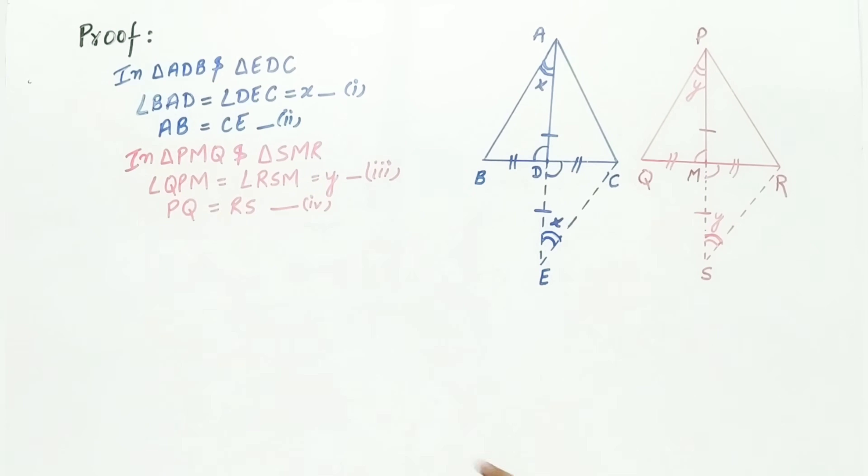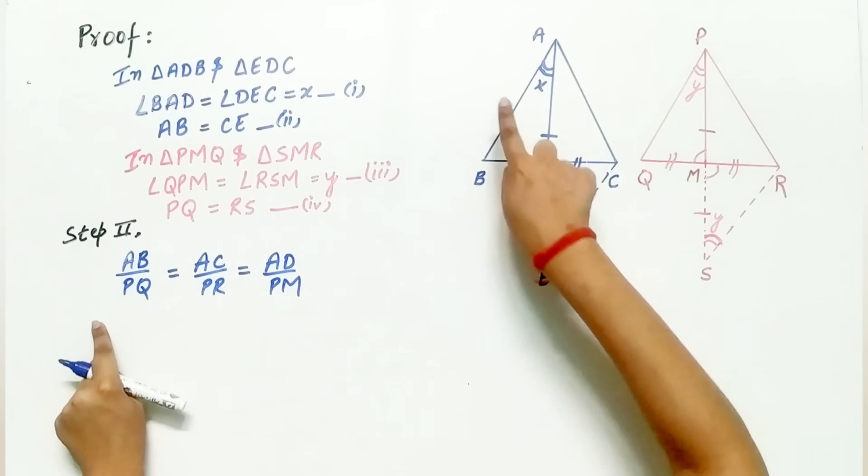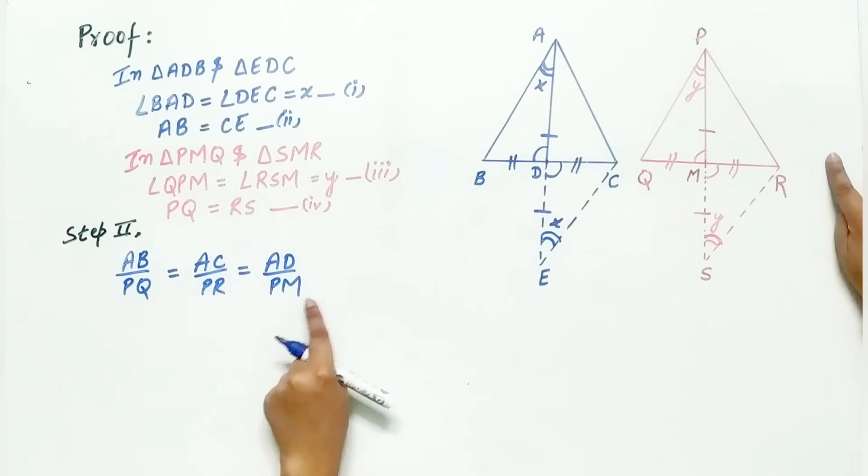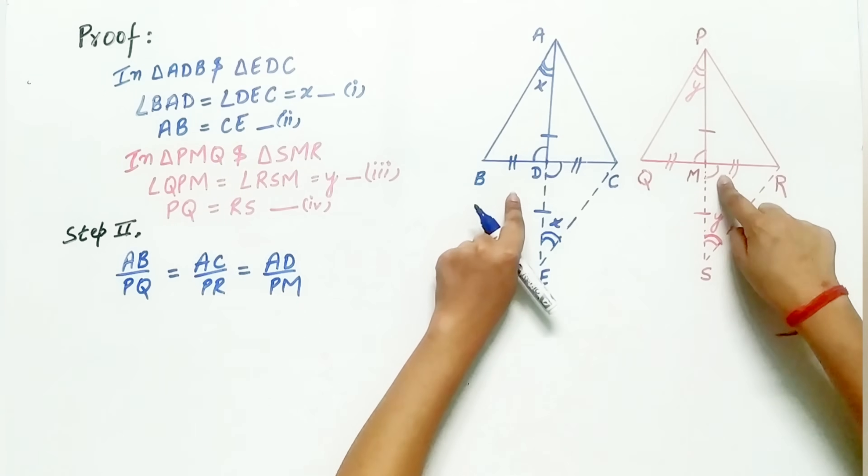Now, let's move to step 2. Now, remember it is given to us that AB is proportional to PQ, AC is proportional to PR, AD is proportional to PM.